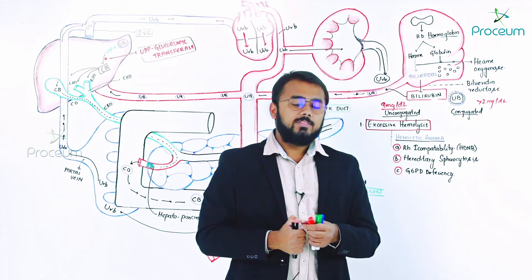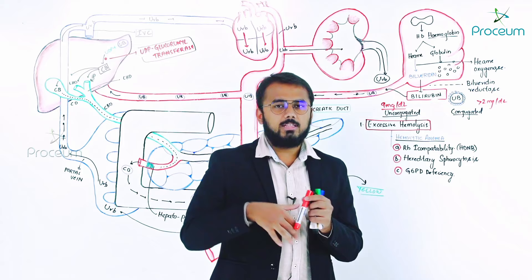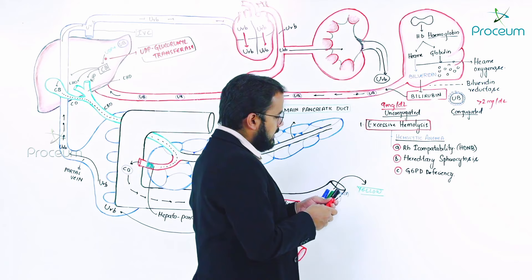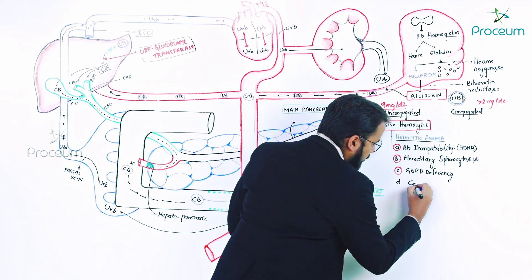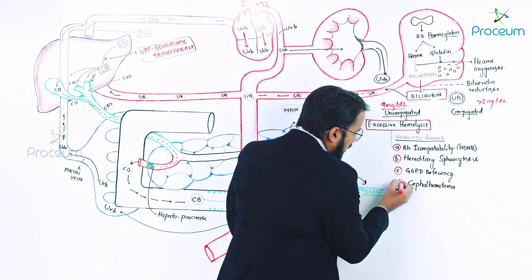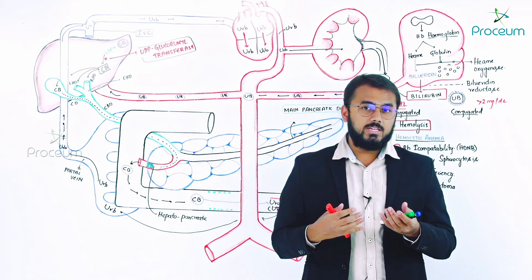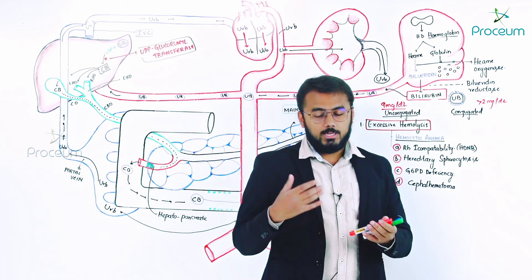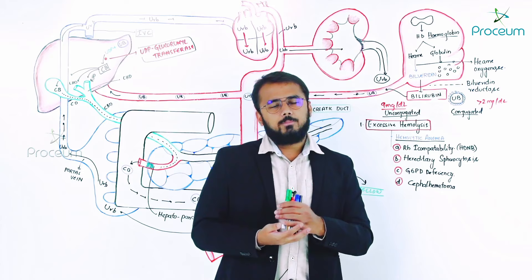Apart from G6PD deficiency, there is also cephalhematoma in neonates — where a hematoma forms. There are two things: caput succedaneum and cephalhematoma, which we will discuss later. Cephalhematoma also causes hemolytic anemia. So the important causes are: hemolytic disease of the newborn, hereditary spherocytosis, G6PD deficiency, and cephalhematoma — all causing excessive hemolysis.